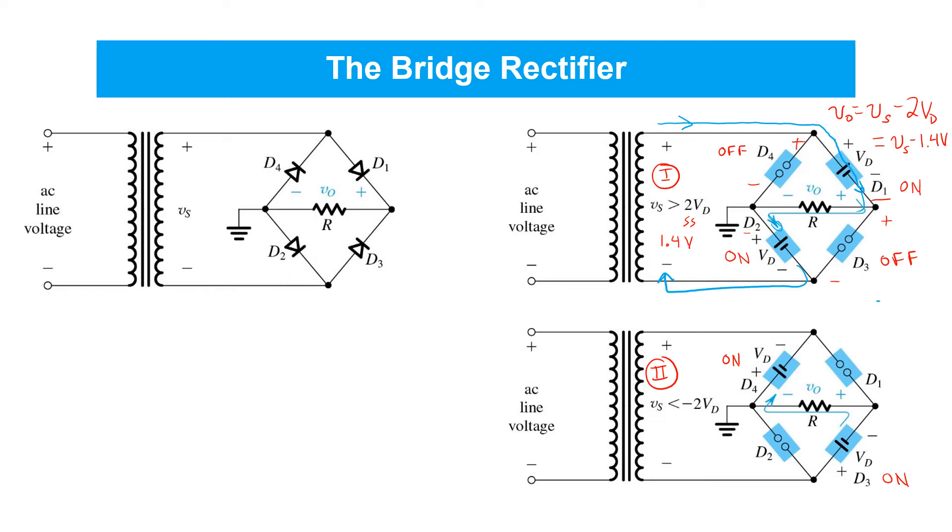Under this circumstance, we would find that D1 and D2 both have reverse bias voltages applied to them. And so, therefore, they'd both be off.